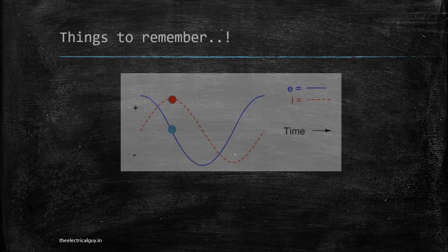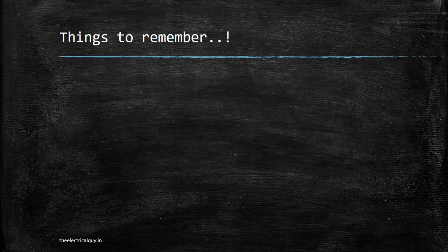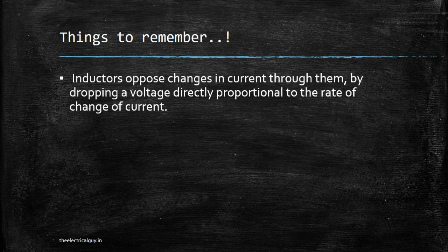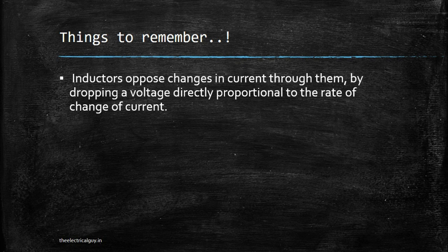Now there are some things that you will need to remember to keep this in mind. Inductors oppose the change in current through them by dropping a voltage directly proportional to the rate of change of current. This means the more the change in current, the more voltage it will drop and vice versa.